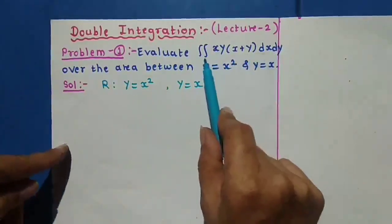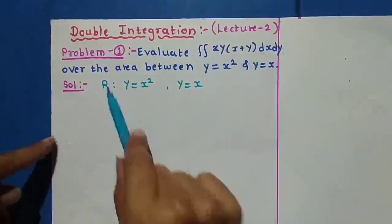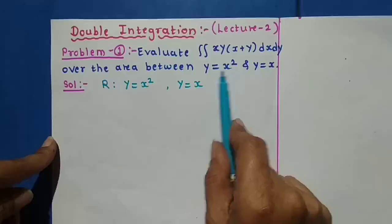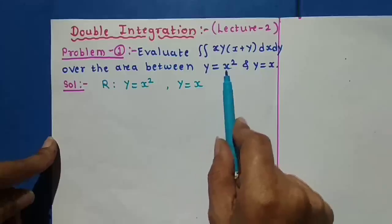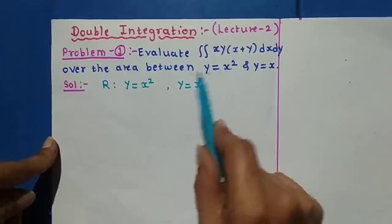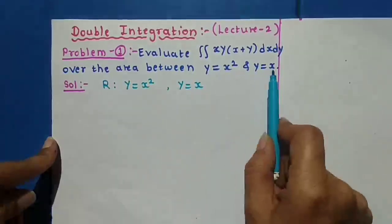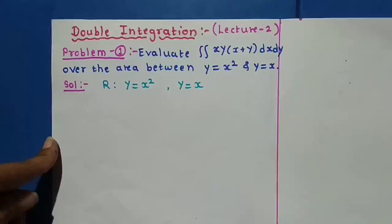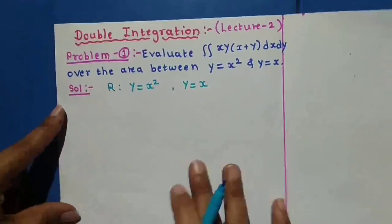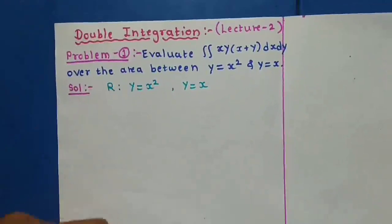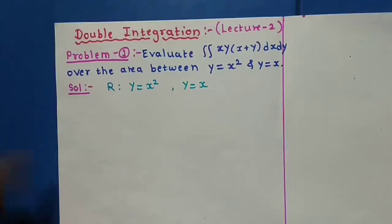We are going to evaluate this integration with respect to x and with respect to y over the area between y = x² and y = x. We know y = x² represents a parabola symmetric about the y-axis, and y = x is a straight line bisecting the xy-plane. The method of evaluating double integration depends on the nature of the curve, so first we write the boundaries of the given curves.